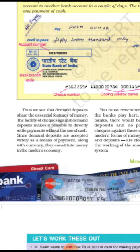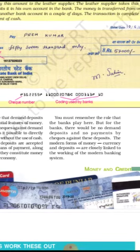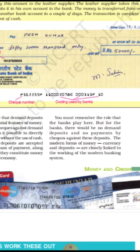Since demand deposits are accepted widely as a means of payment along with currency, they constitute money in the modern economy. The role the bank plays here is crucial — without banks, there would be no demand deposits and no payments by cheques. The modern forms of money, currency and deposits, are linked to the working of the modern banking system.